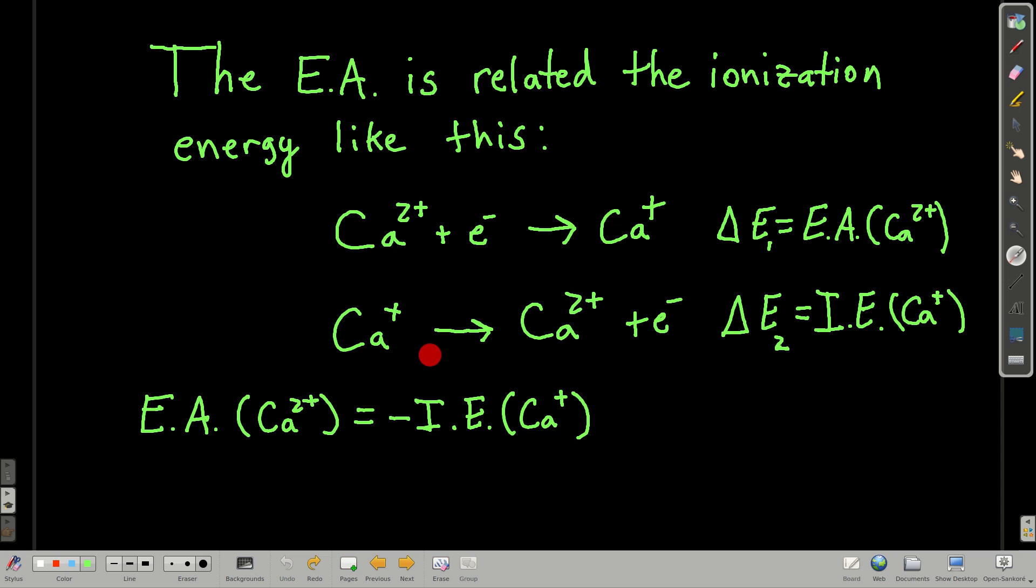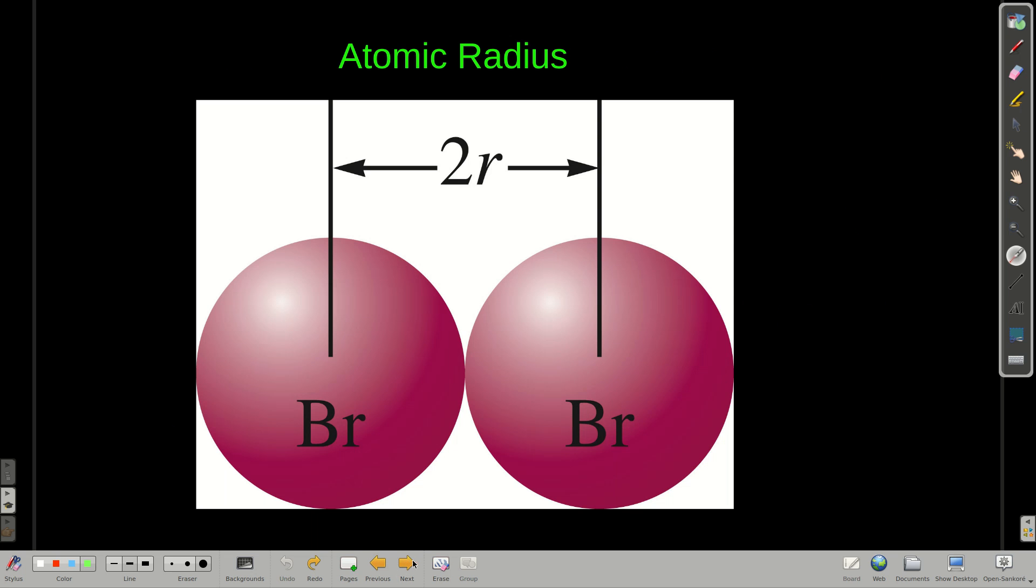What's this process? This process right here, the exact opposite of this, describes the ionization energy for the calcium plus one going to the calcium plus two. So we can say that the change in energy for these two processes are equal in magnitude to each other but opposite in sign. So the electron affinity of the calcium plus two ion is equal to negative of the ionization energy of the calcium plus one.